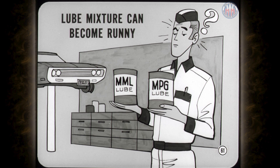If you mix different types of front wheel bearing lube, the mixture can become runny and leak out onto the lining. So play it safe — wash out all the old lube and don't overdo it when you repack the bearings. Be sure to install new seals when you remove the bearings for any reason.